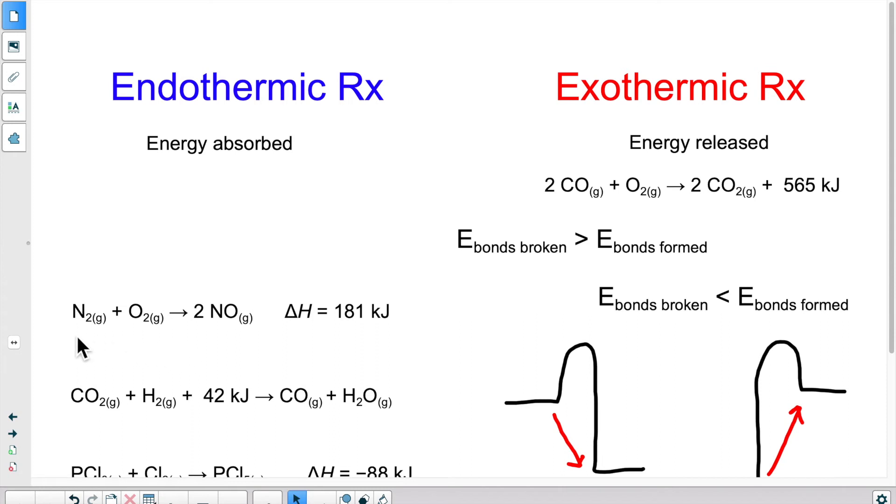Here we have a reaction with the enthalpy expressed outside of the reaction, but it doesn't have a negative sign. If it doesn't have a negative sign, then automatically it has to be positive. We don't always put the positive sign; it's implied that it's positive. Does this mean it's an endothermic or exothermic reaction? You are correct if you said endothermic. So, this would go here.